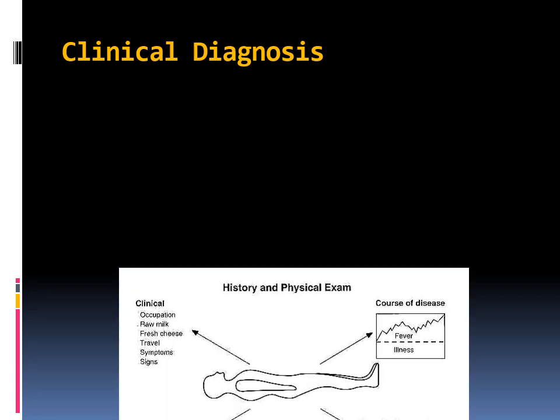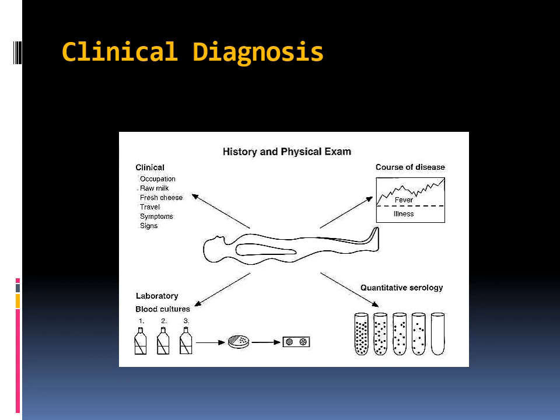For clinical diagnosis, first take a history — occupation is very important. If the person is coming in contact with animals, has a history of consuming raw milk, has travel history, or has relevant symptoms, that goes in favor of Brucella. Since it is a zoonotic infection, a long history is typical. This may point toward PUO — pyrexia of unknown origin — after which you proceed to laboratory diagnosis, which will be discussed in the next video.